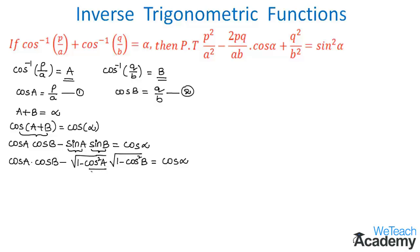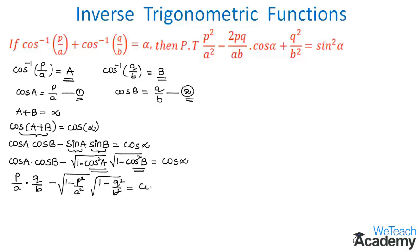Substituting cos A = P/A and cos B = Q/B from equations 1 and 2: (P/A)(Q/B) − √(1 − P²/A²) · √(1 − Q²/B²) = cos α. Transferring cos α to the left and the square root term to the right: PQ/AB − cos α = √(1 − P²/A²) · √(1 − Q²/B²).